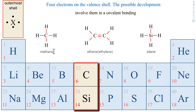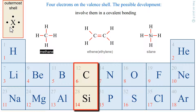Why methane? Why CH4? Because carbon has 4 valence electrons available, ready to associate with the electron of each hydrogen to make binding doublets and form methane CH4. Carbon is said to be tetravalent.